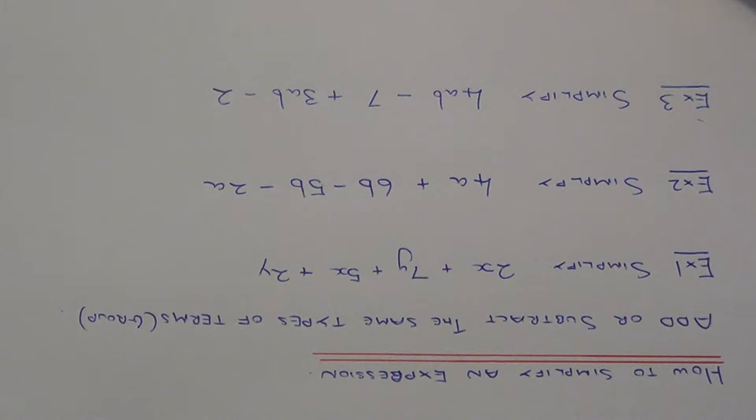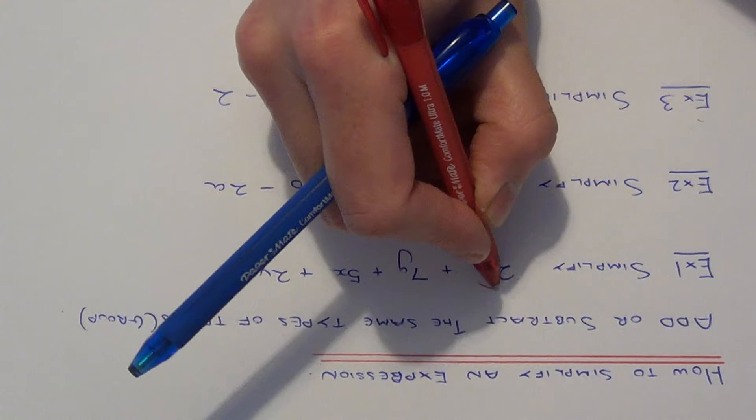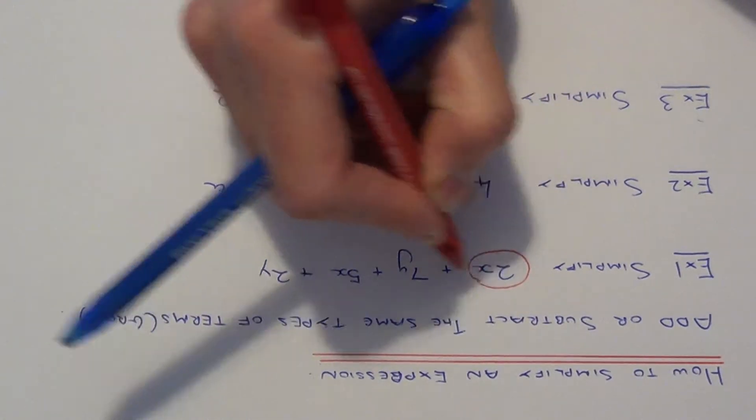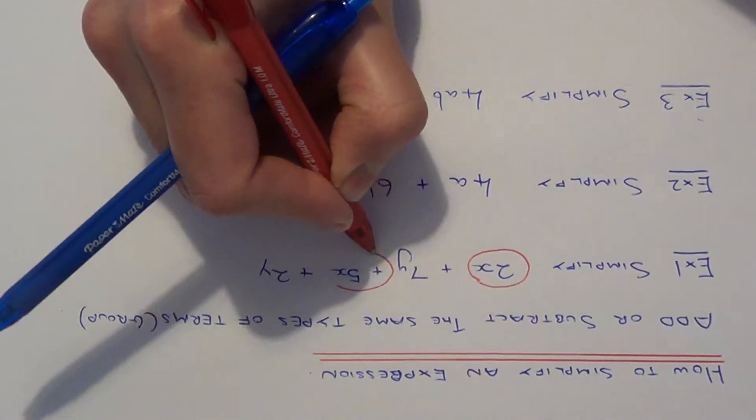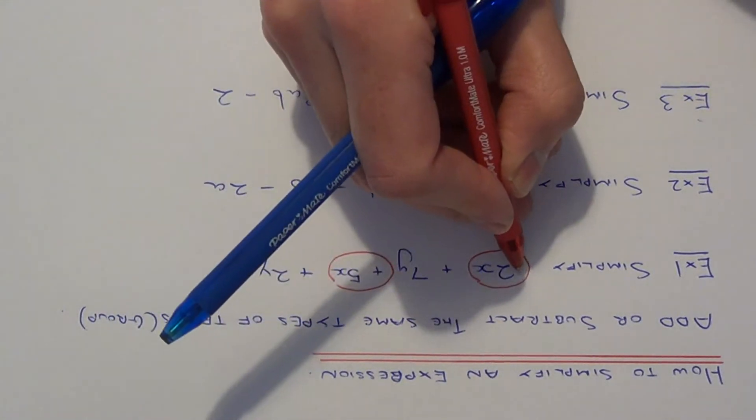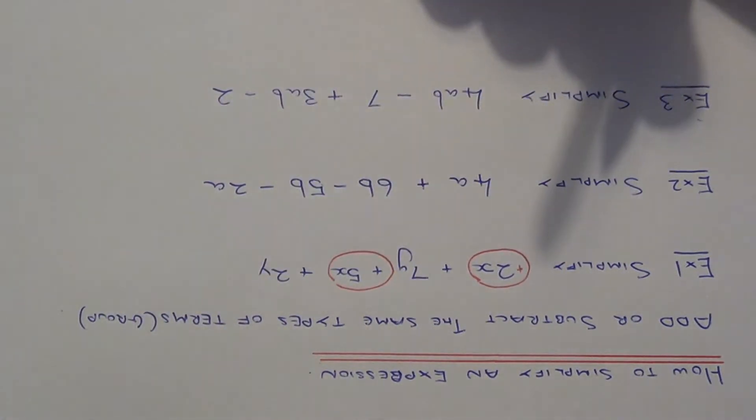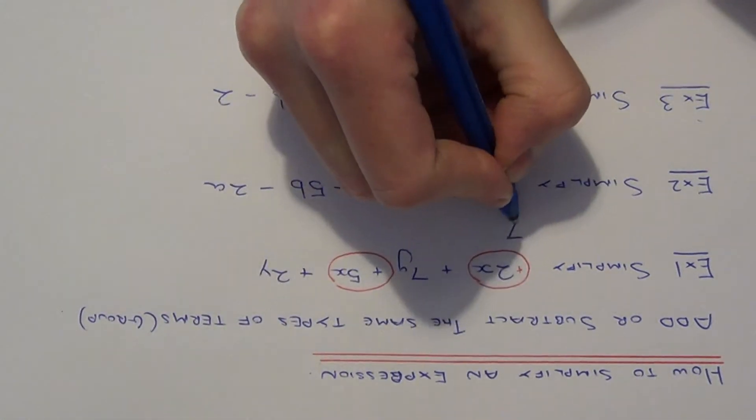So let's do the x terms first of all. I'm going to circle these in red. Notice how I circle the sign in before each term. So with the x terms we've got 2x and 5x, so that gives 7x.